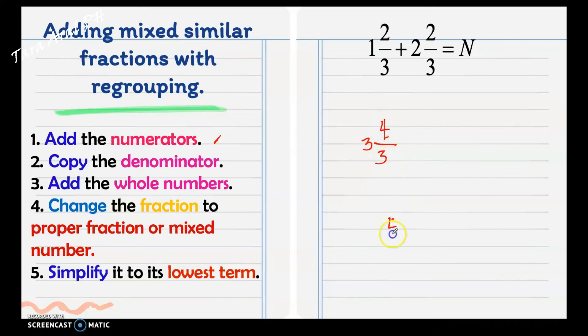We have 4/3. Divide the numerator by the denominator. We have 1, with remainder 1. So, 4/3 is equal to 1 and 1/3 for our quotient and remainder, and 3 as the divisor or the same denominator. This 1 and 1/3 will be added to 3 since we have a whole number. Then, our answer would be 3 plus 1, we have 4, then 1/3. 4/3 is equal to 1 and 1/3. That's why we add it to 3. And, our final answer is 4 and 1/3. It's already in the simplest form. That's our final answer.